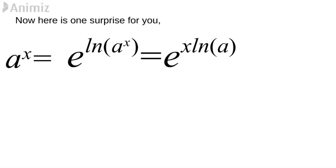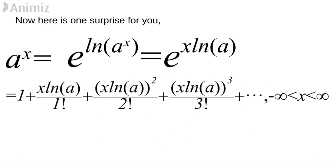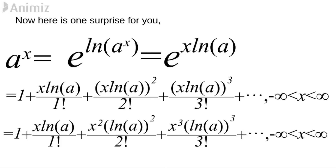We know how to expand e^x. Applying that polynomial form here, we get: 1 + (x·ln a)/1! + (x·ln a)²/2! + (x·ln a)³/3! + ... up to infinite terms — and hence that is the final form for a^x.